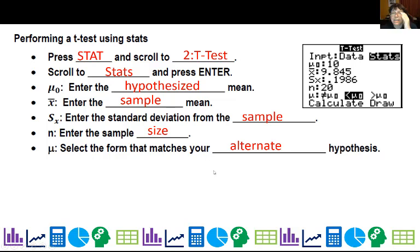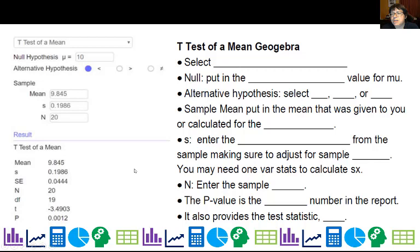Now another applet which you can do, and I'll have a link on the website to the geogebra applet and on your WebAssign, is a t-test of a mean using geogebra. So this one does use statistics, so if you have a list of data, you're better off on the calculator or using statlet. And I'll also have instructions on the statlet on the website, so you can check that out.